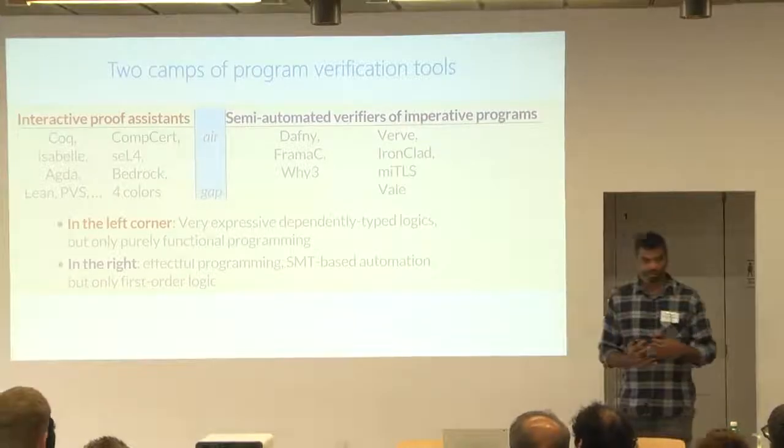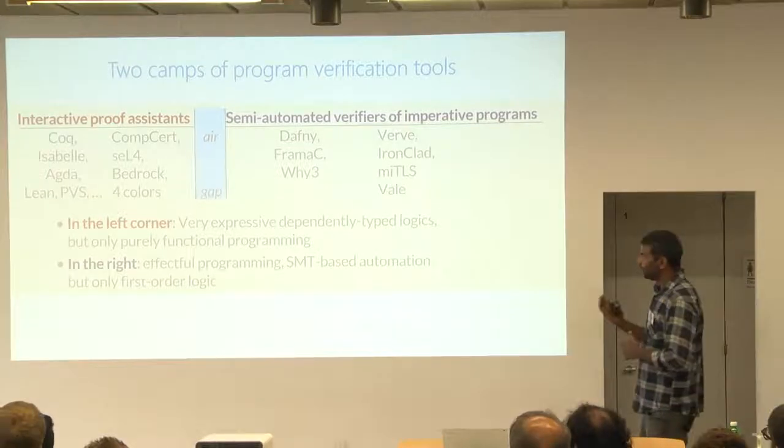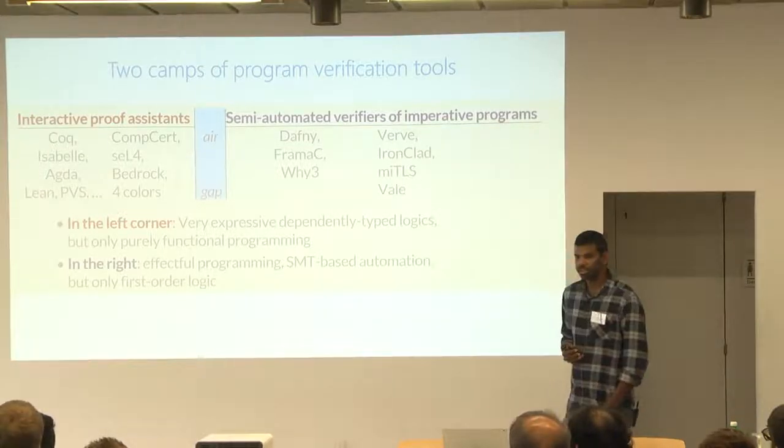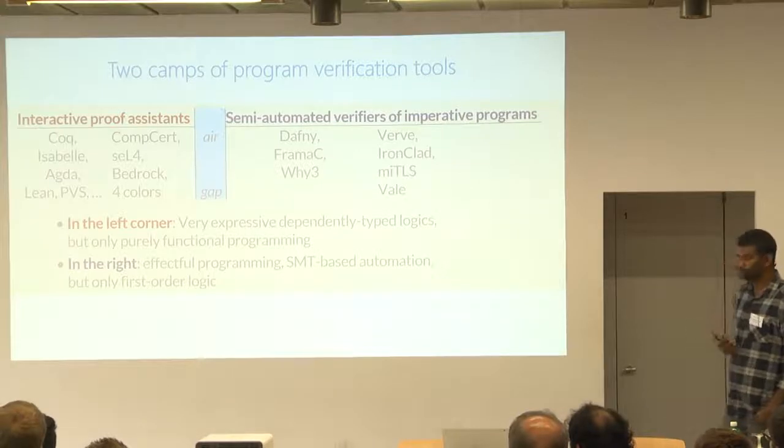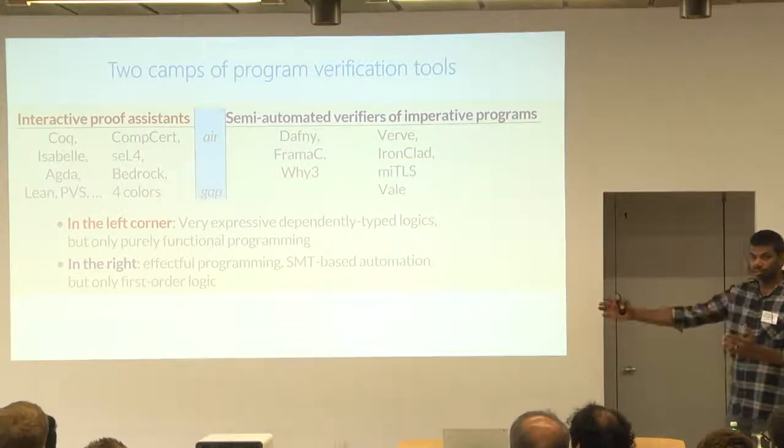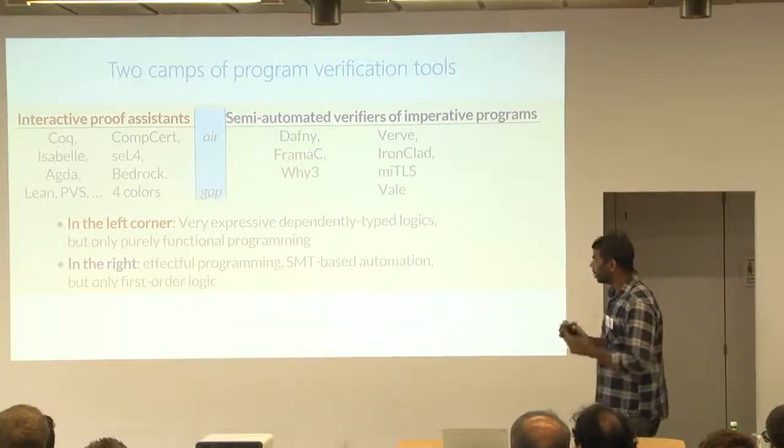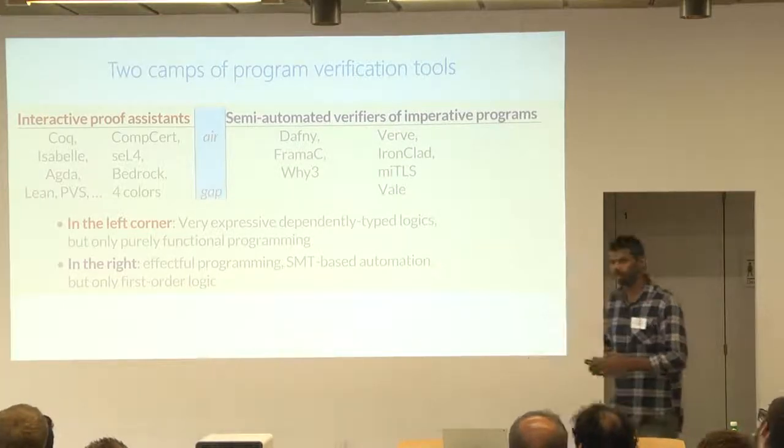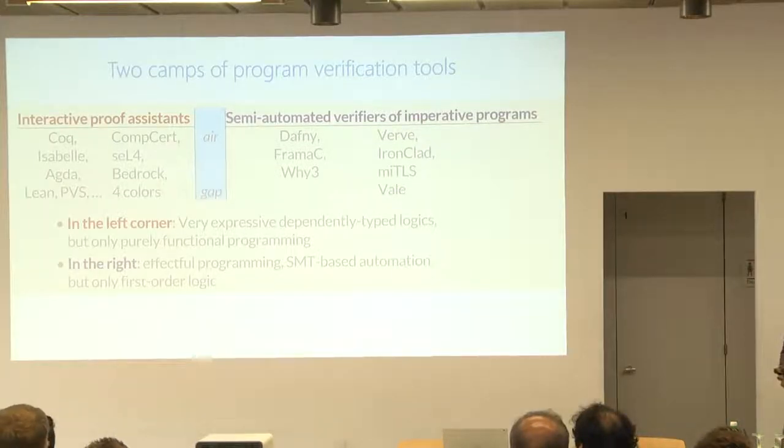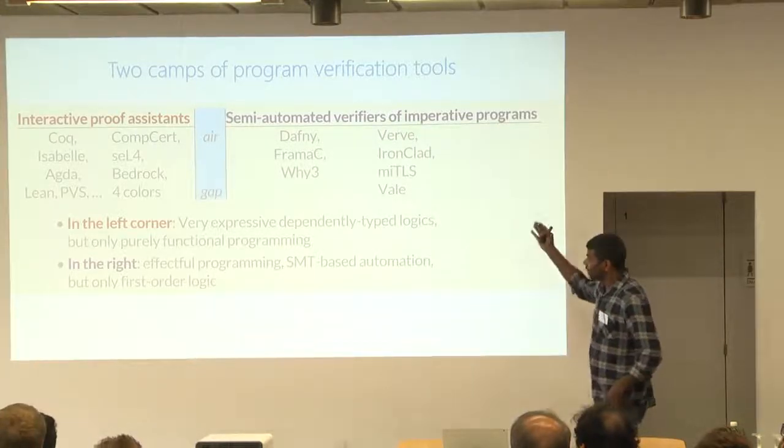Well, I think there's kind of two camps in program verification tools. On the one hand, you have interactive proof assistants, like Coq and Isabelle and Agda and so on, that are based on very expressive, dependently typed theories, where you can essentially state and prove things that are arbitrary properties in mathematics. But they're based on purely functional programming languages. So in a way, they're very expressive logics, but impoverished programming models, because it's pure functions only. And all proofs tend to be interactive.